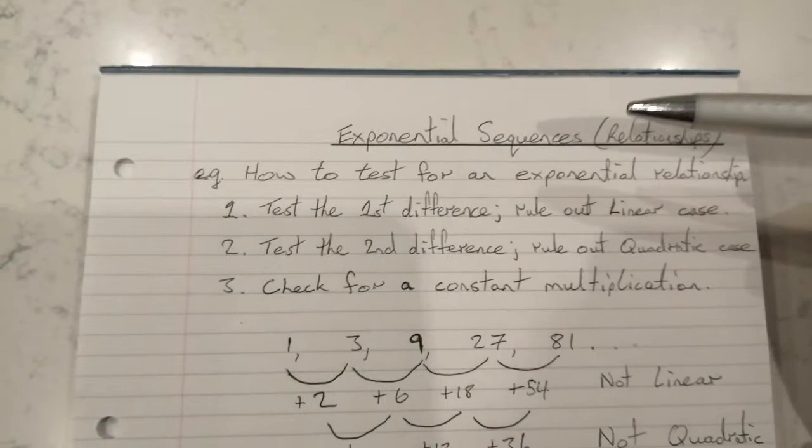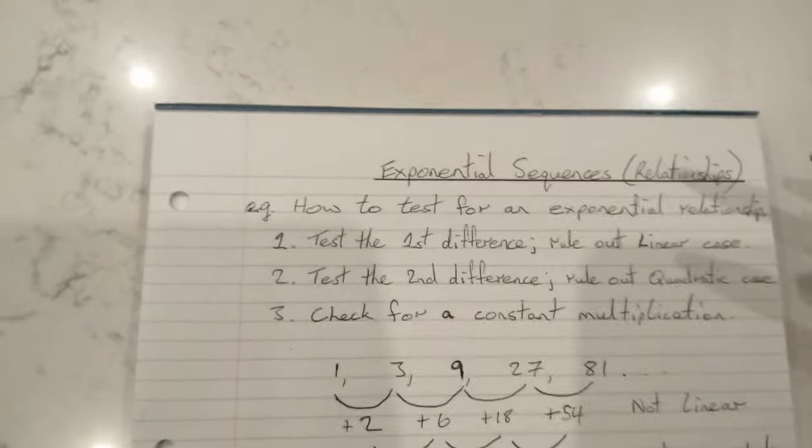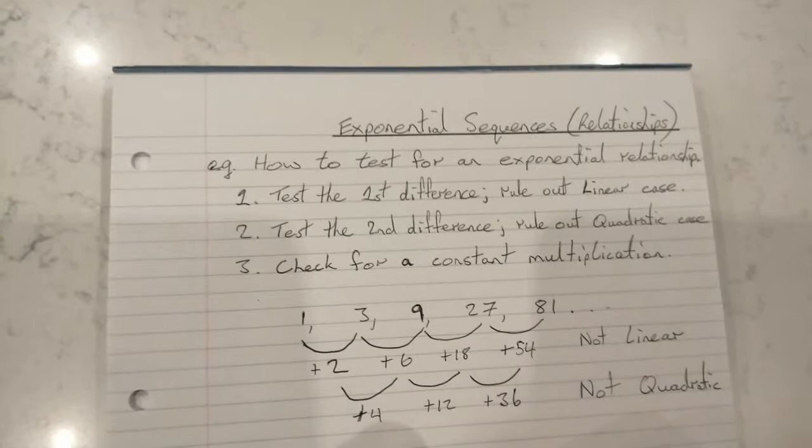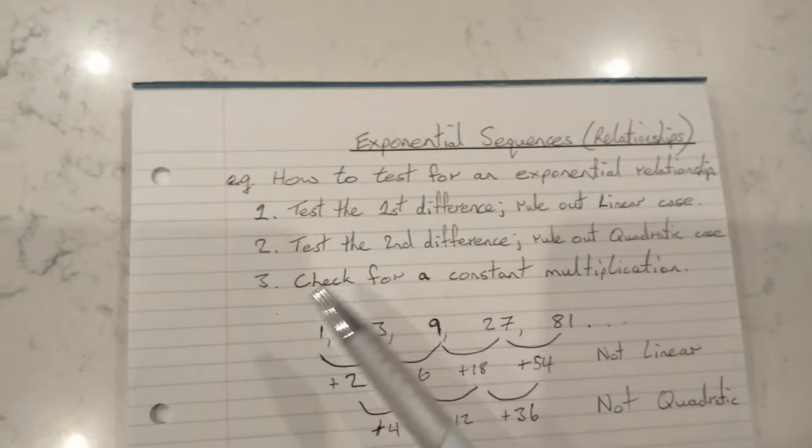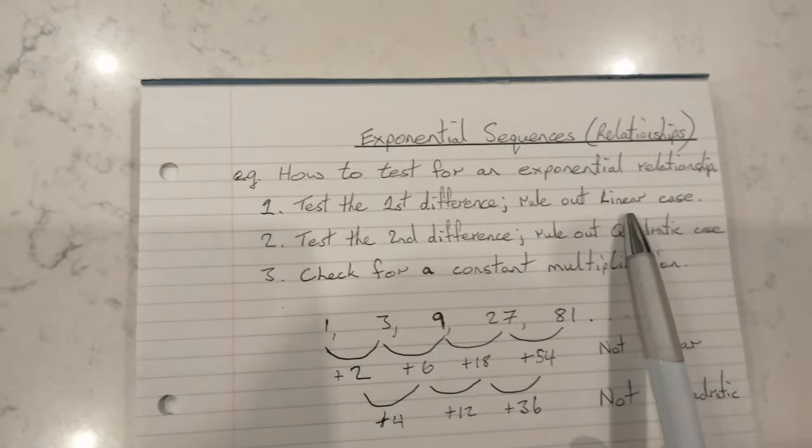Okay, hi all. Today we're going to talk about our last type of sequence or relationship, and it's going to be an exponential relationship. So the first thing is, how would we test for an exponential relationship if we were given a sequence of numbers and we wanted to know if it was an exponential sequence?